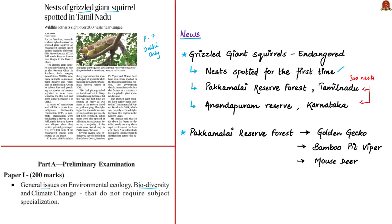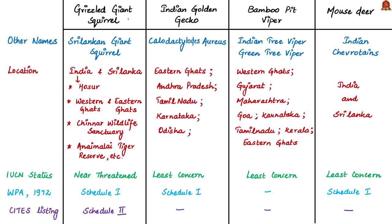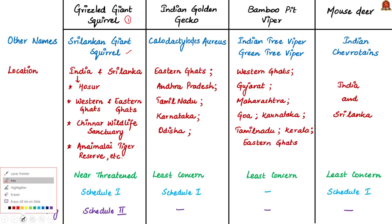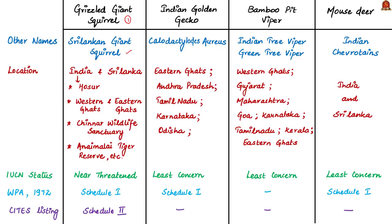The Anantapuram reserve is located in Karnataka. Several diverse and endangered species including the Indian Golden Gecko, Bamboo Pit Viper and Mouse Deer have also been spotted in Pakkamalai Reserve Forest. The Grizzled Giant Squirrel is also known as the Sri Lankan Giant Squirrel. It is an endemic giant squirrel distributed in southern India and Sri Lanka. The distribution range in India spans from the Grizzled Squirrel Wildlife Sanctuary in the south to Hosur Forest Division in the north. Within this range, it is confined to low elevation riparian forests and low precipitation zones of the Western and Eastern Ghats.